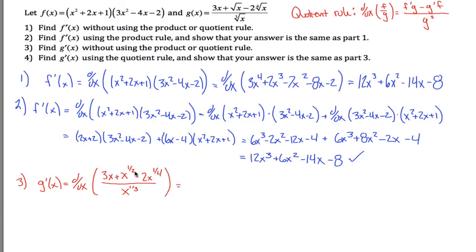So really it's the derivative of this quotient I'm trying to take. It looks like a quotient — kind of like the first function looked like a product. But in part 3, just like part 1, I'm not supposed to use the product or quotient rule. So I need to figure out a way to rewrite this so it's not a quotient. You can do that using exponent rules: when you have a sum divided by one term, you can split each term on top by the term on the bottom.